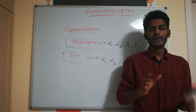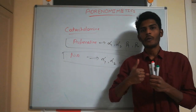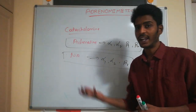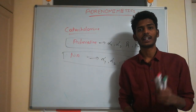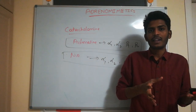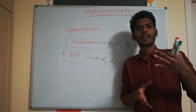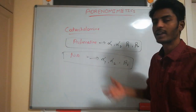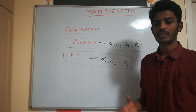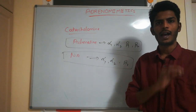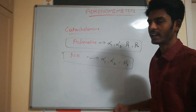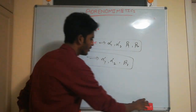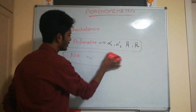Adrenomimetics can be classified into direct acting drugs, which act directly on the receptor, and indirect acting drugs, which stimulate adrenoreceptors indirectly. Catecholamines come under direct acting drugs, which are the major focus of this video.